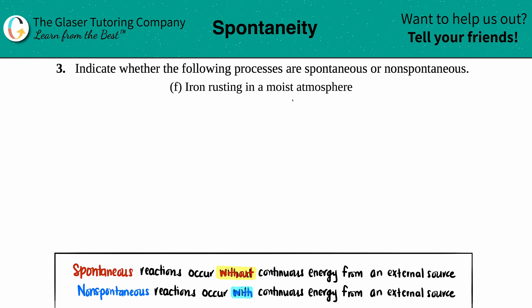Number three: Indicate whether the following processes are spontaneous or nonspontaneous. Letter F: Iron rusting in a moist atmosphere. Is that spontaneous or nonspontaneous?